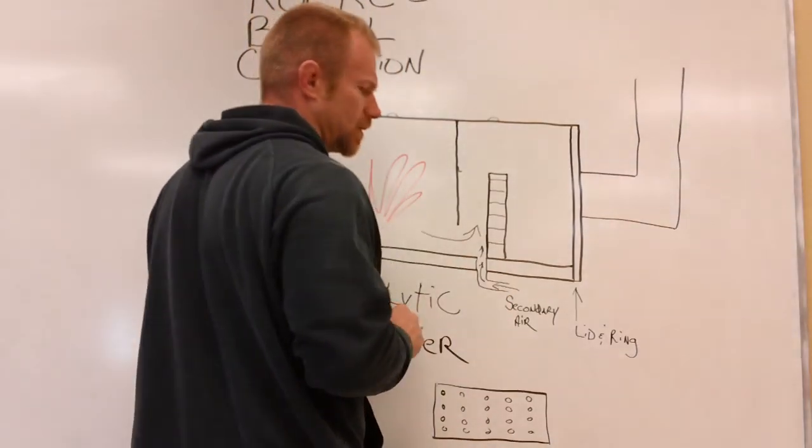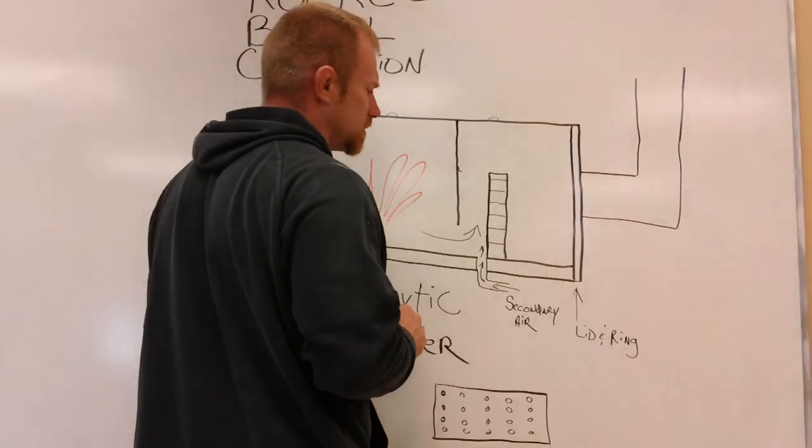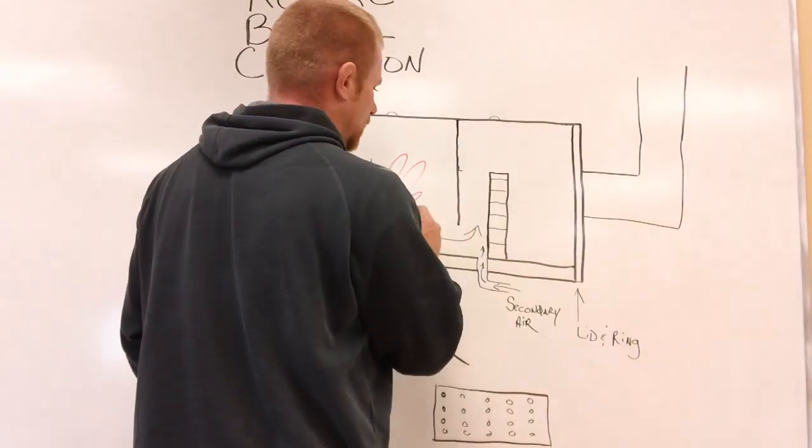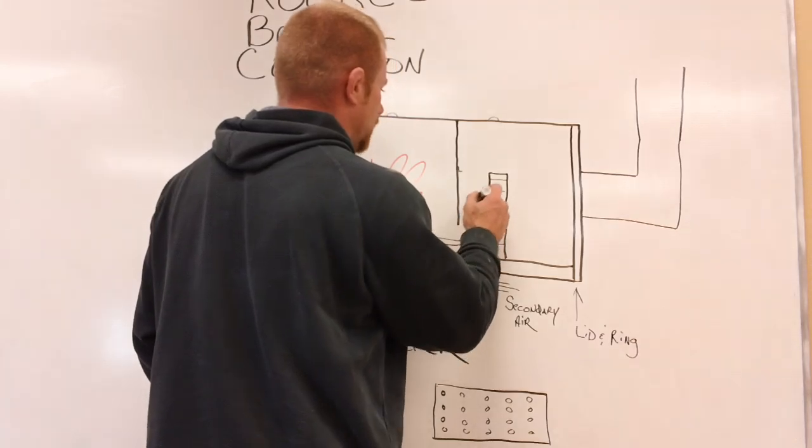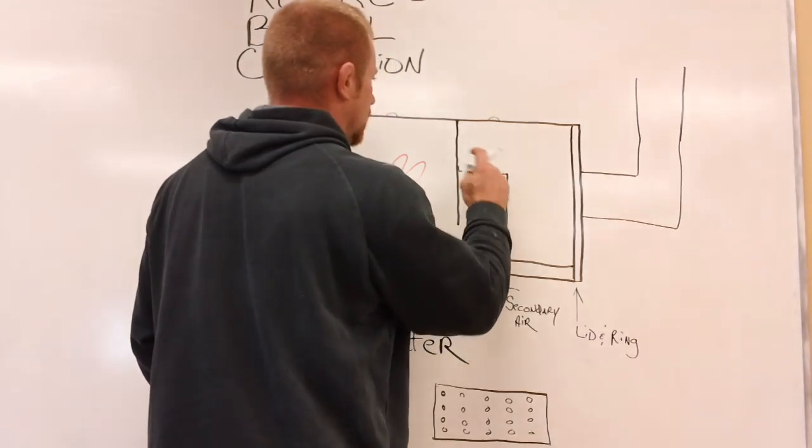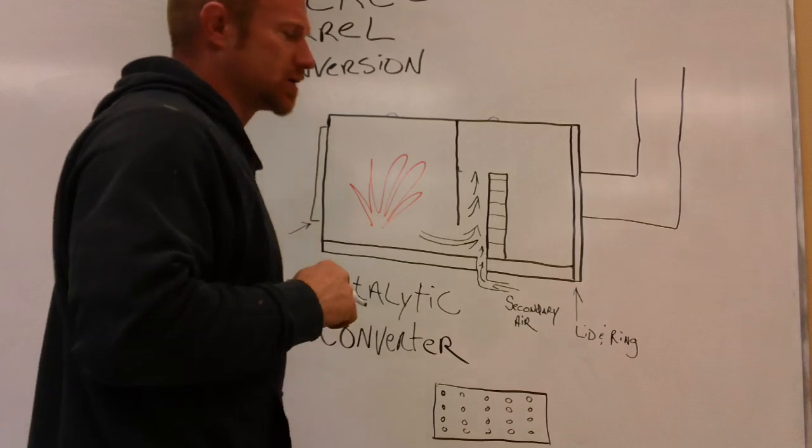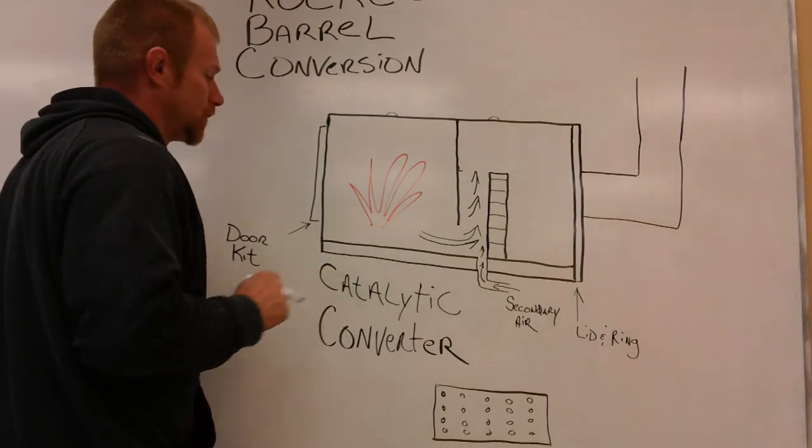So this is just a block of fire brick in there stacked up to give it a barrier. It will draw this smoke and fire up through here. It will come up here and it'll basically burn like a rocket stove.